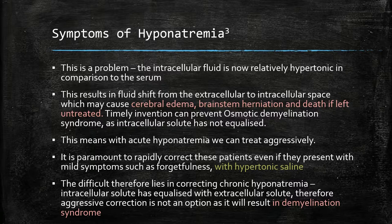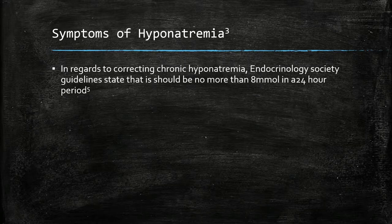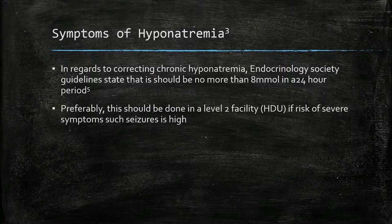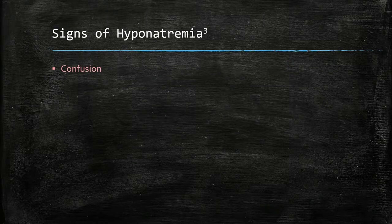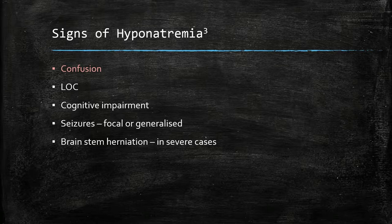The difficulty lies in correcting chronic hyponatremia, where intracellular solute has equalized with extracellular solute. Aggressive correction is not an option as it will result in osmotic demyelination syndrome. The Endocrinology Society guidelines state that correction should be no more than 8 mmol in a 24-hour period, preferably done in a level 2 facility. Signs of hyponatremia include confusion, loss of consciousness, cognitive impairment, seizures, and brainstem herniation in severe cases.